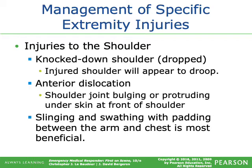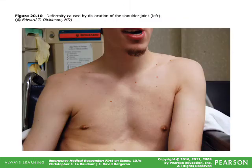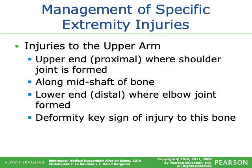Injuries to the shoulder: a dropped shoulder will appear to droop. In an anterior dislocation, the shoulder joint appears bulging or protruding under the skin at the front of the shoulder. A sling and swath with padding between the arm and chest is the most beneficial type of splint. Injuries to the upper arm can occur at the proximal end near the shoulder joint, along the mid-shaft, or at the distal end near the elbow joint. Deformity is a key sign of injury to this bone.